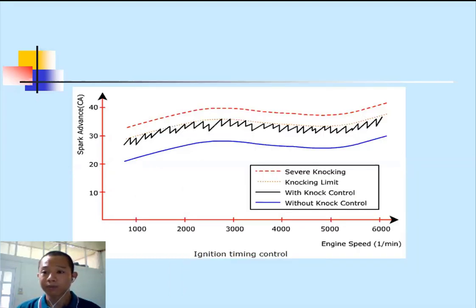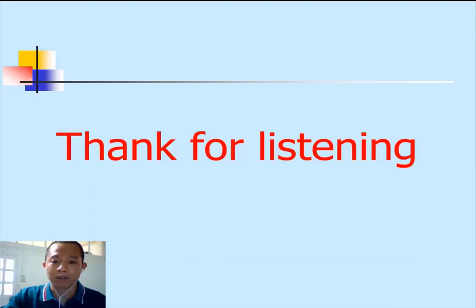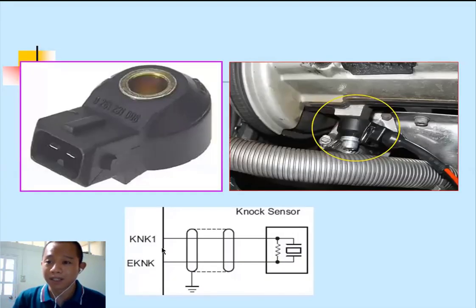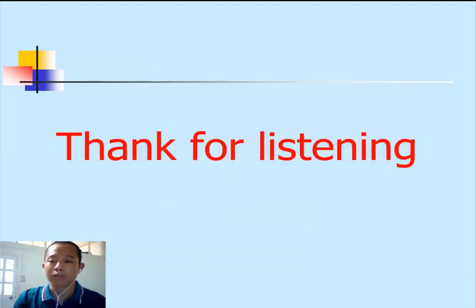To test knock sensor operation, it's difficult to create actual knock conditions. To verify that timing retard works, you can simulate knock by applying 2.5V directly to the knock sensor signal wire. When you apply 2.5V to the sensor pin, the ECU interprets this as knock occurring. When you remove it, the ECU knows knock has stopped. This is an effective testing method. This concludes the lecture on knock sensors and the series on engine sensors.